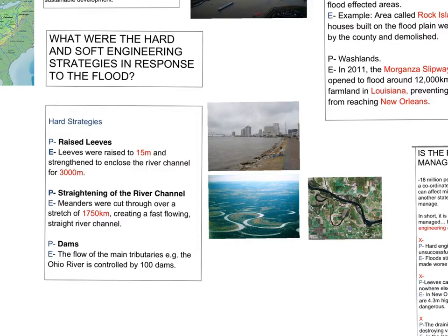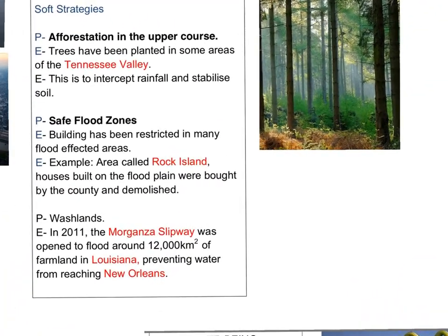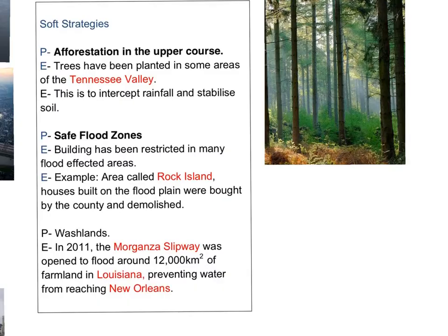The next area to consider are our soft engineering strategies, with three main examples. First, afforestation — planting trees to increase rates of interception and uptake through the roots. Our example here is trees being planted in the Tennessee Valley. It also stabilises the soil to prevent erosion and prevent flash floods as water reaches the river channel very quickly.